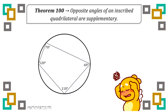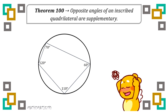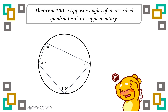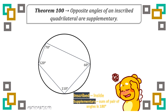Lastly, for theorem 100: opposite angles of an inscribed quadrilateral are supplementary. First of all, what is inscribed? It means inside. And supplementary means the sum of a pair of angles is equivalent to 180 degrees.